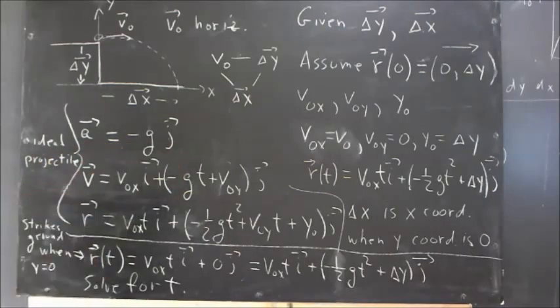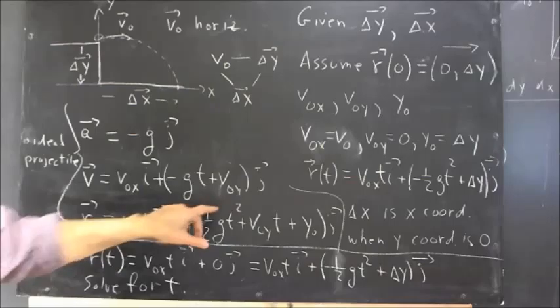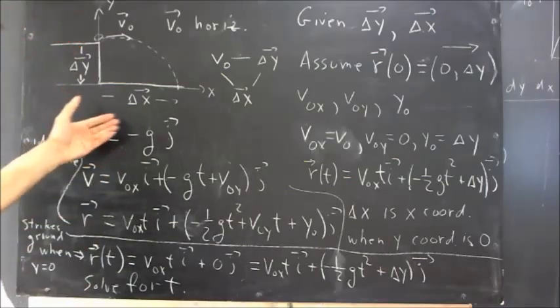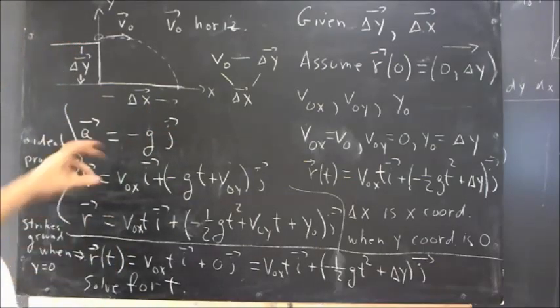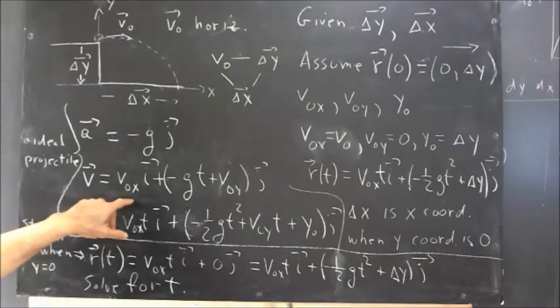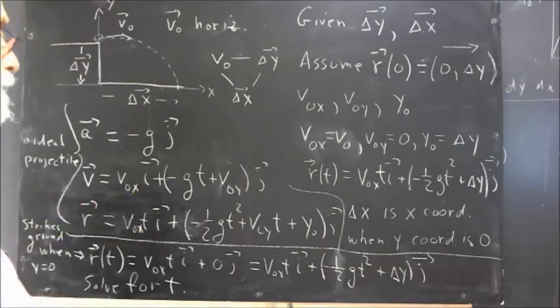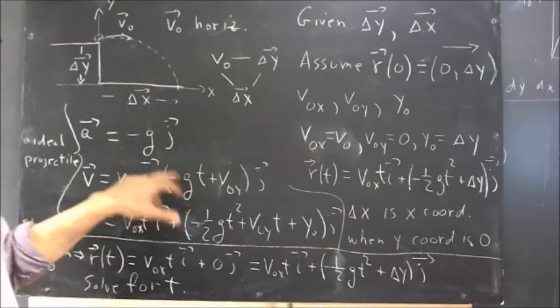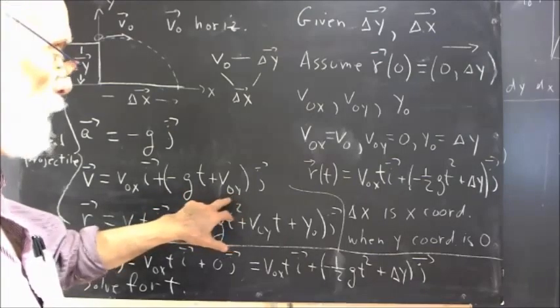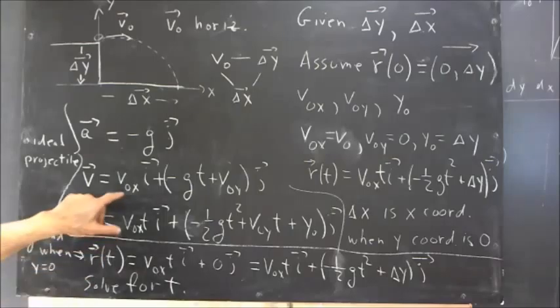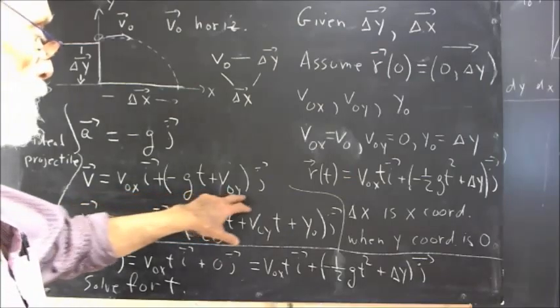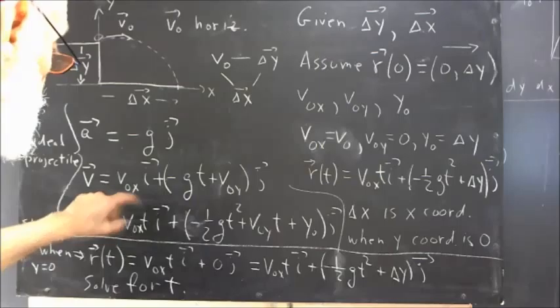Integrating this acceleration vector, we get our velocity vector. We have 0i minus g j. That has to be integrated, and that's going to give us a constant times i. That constant can be identified with the initial x velocity in most applications. Integrating g, we get negative gt plus a constant. The constant turns out to be the y velocity at t equals 0. The constant we get for i is the initial x velocity, and the constant we get for y is the initial y velocity.